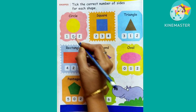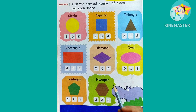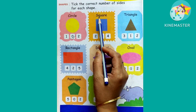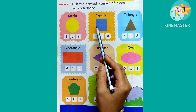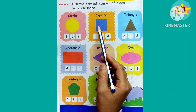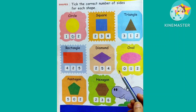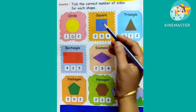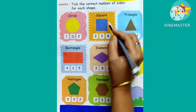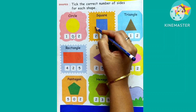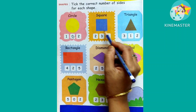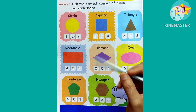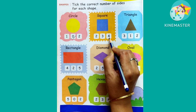Let's move on to the next shape. This is a square — in Hindi we call it 'varg.' Let's see how many sides there are: one, two, three, four. There are four sides. Square has four sides, so we have to tick on the number four.